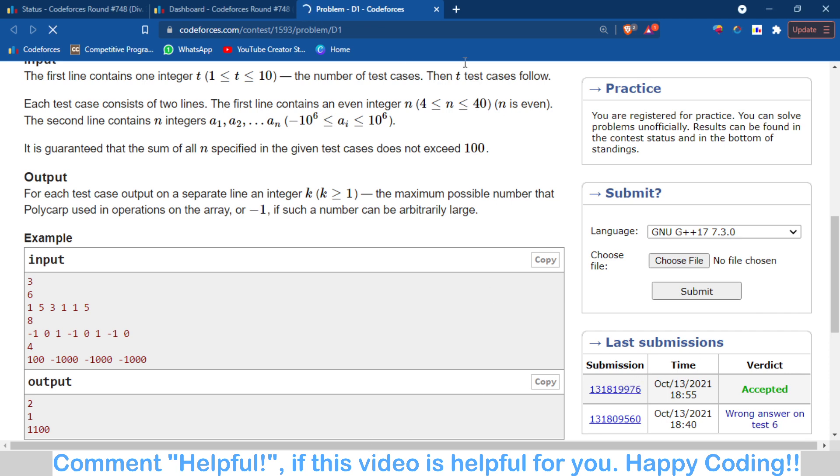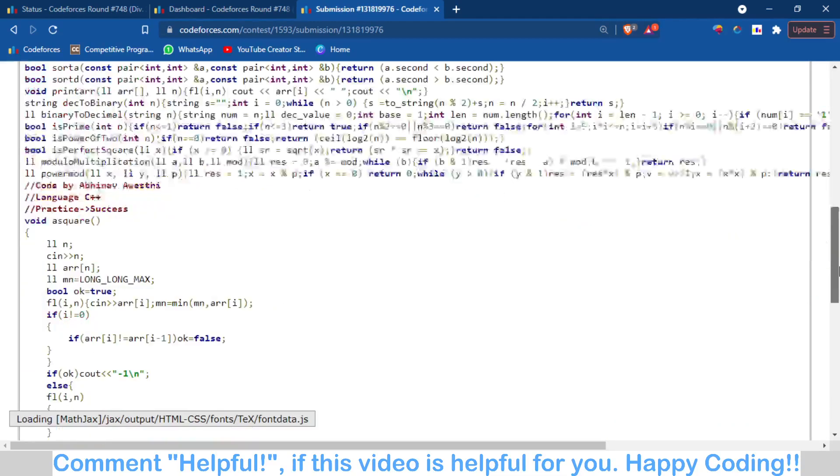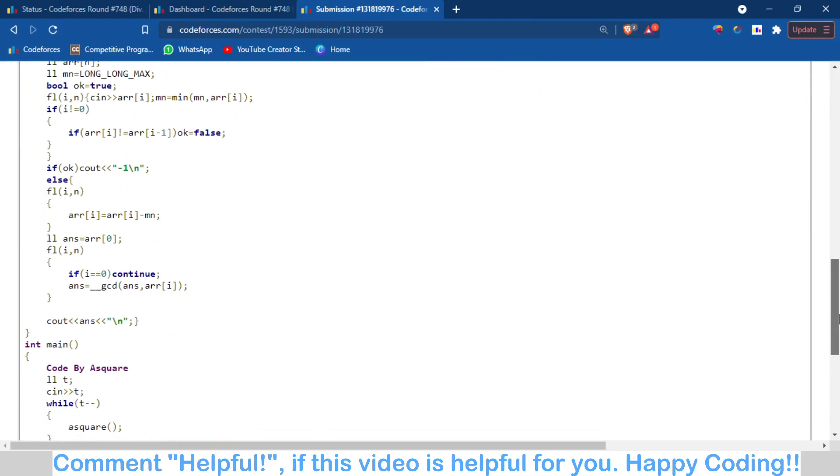This is my code. What I have done is first of all I have checked that if all the numbers are equal, and if all the numbers are equal then I have to just print minus 1.